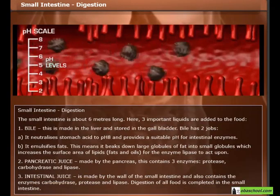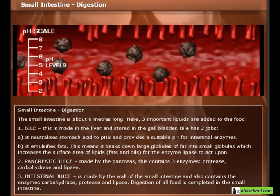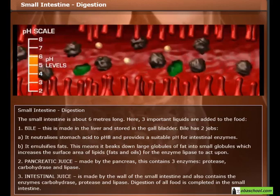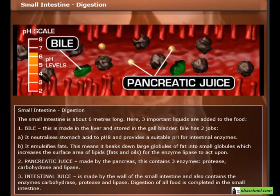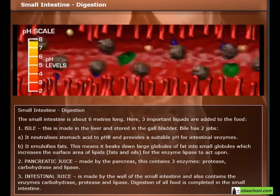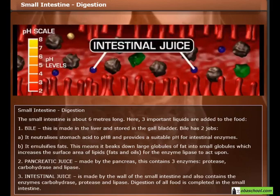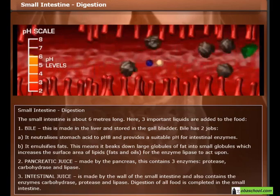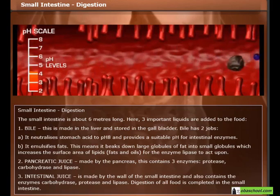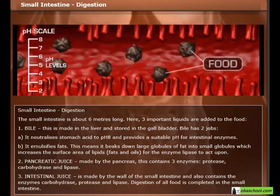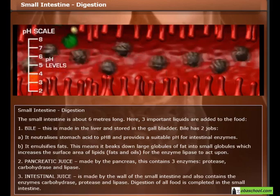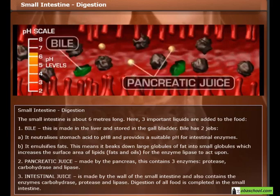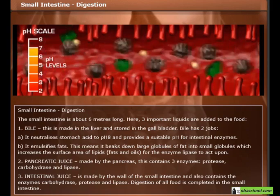In the small intestine, which is about six meters long, three important liquids are added to the food. First, bile — made in the liver and stored in the gallbladder — has two jobs: it neutralizes stomach acid to pH 8, providing a suitable pH for intestinal enzymes, and it emulsifies fats, breaking large globules of fat into smaller globules, increasing the surface area of lipids for the enzyme lipase to act upon.